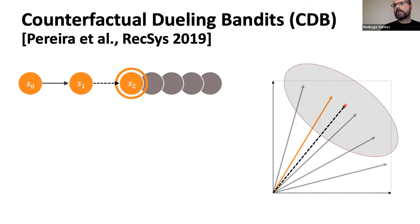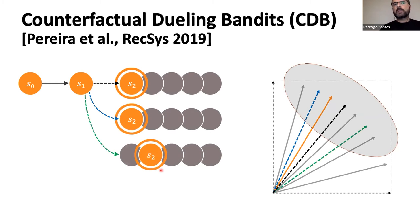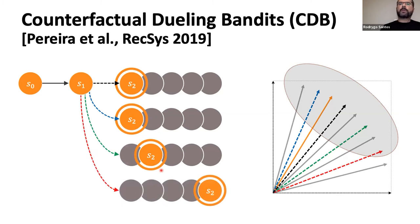At this point, what CDB does is it triggers an update of the model via exploration. It explores the region around the current model, with a hyperparameter controlling how much we explore in the vicinity of the current model, and we sample candidate models as alternatives in this region. For example, a blue model would unfortunately rank the skip song on top, but a green model would place that same skipped song at second position, which is slightly better. A third model in red would place that skip song at the bottom. So we have many candidate directions to improve upon the current model.